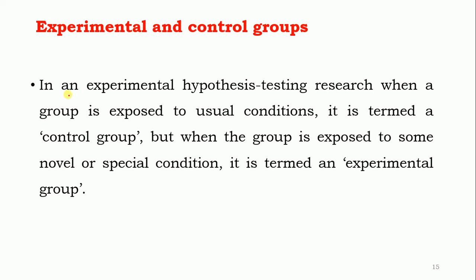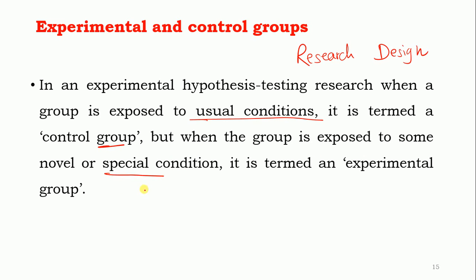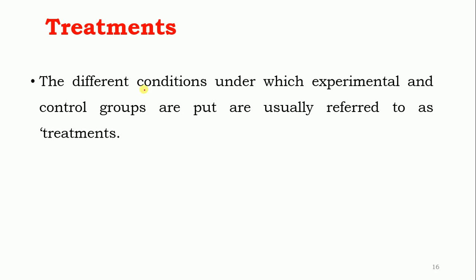Experimental and control groups: in experimental hypothesis testing research, when a group is exposed to usual conditions as decided in the research design, it is termed a control group. When a group is exposed to some novel or special conditions, it is termed an experimental group. The different conditions under which experimental and control groups are put are usually referred to as treatment.